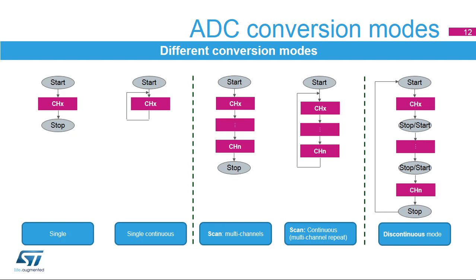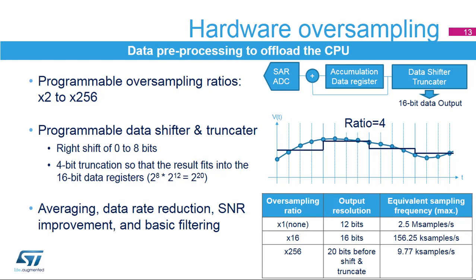The ADC supports several conversion modes: single mode, which converts only one channel in single-shot or continuous mode; scan mode, which converts a complete set of predefined programmed input channels in single-shot or continuous mode; and discontinuous mode, which converts only a single channel at each trigger signal from the list of predefined channels. The ADC also supports hardware oversampling — sampling 2 to 256 times without CPU support. The converted data is accumulated in a register and processed by the data shifter and truncator, enabling averaging, data rate reduction, signal-to-noise ratio improvement, and basic filtering.